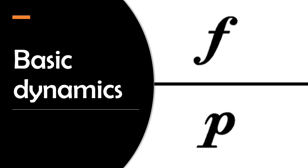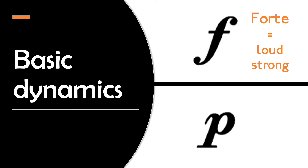The good thing is that dynamics are pretty easy to understand and identify — you just have to know the Italian terms. Let's start with the most basic words for loud and quiet. When you see an F marked in the music, it stands for forte, which means loud or, more accurately, strong. P stands for piano, which means quiet or soft.